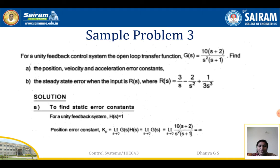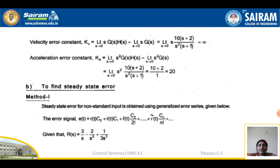Substituting, limit s tends to 0 of 10(s+2) / (s²(s+1)). As s tends to 0, the denominator term becomes 0, so Kp = infinite. For Kv, limit s tends to 0 of s·G(s) = limit s tends to 0 of s·10(s+2) / (s²(s+1)). After one s cancels, one s remains in the denominator; as s tends to 0, Kv = infinite.